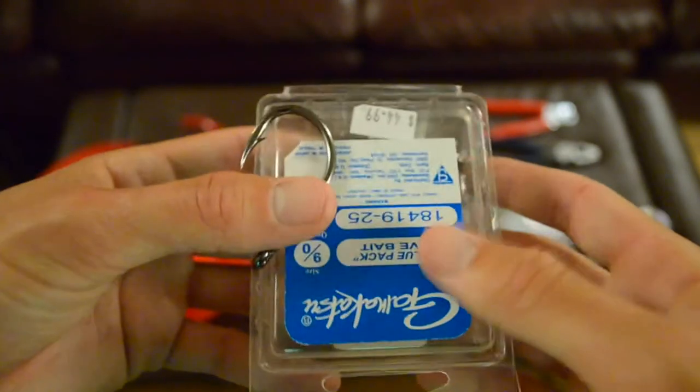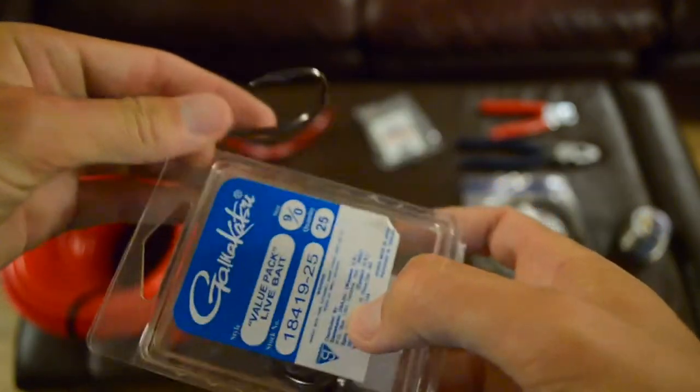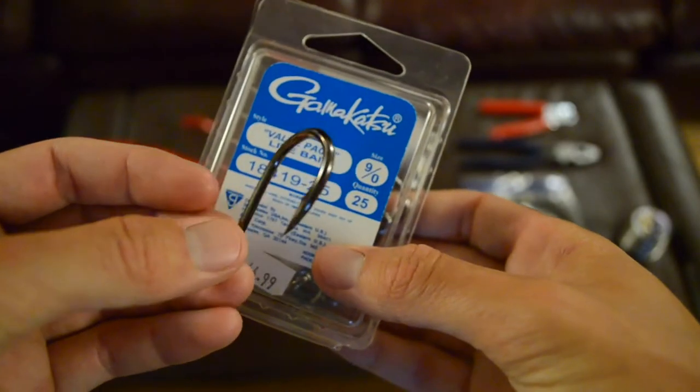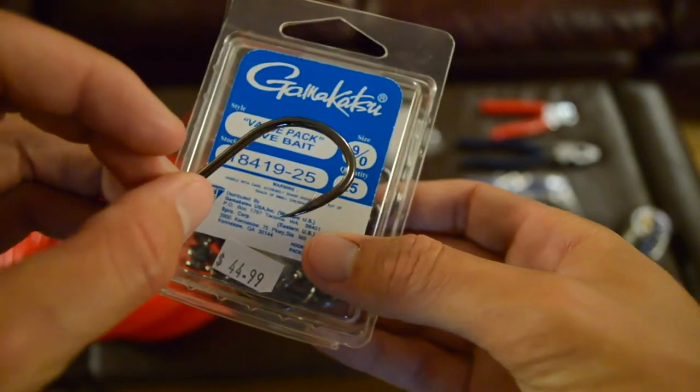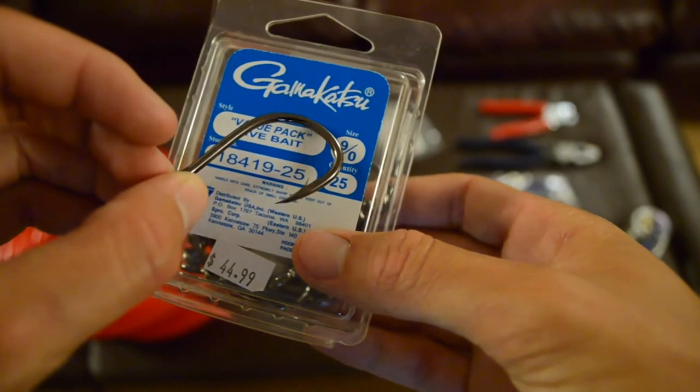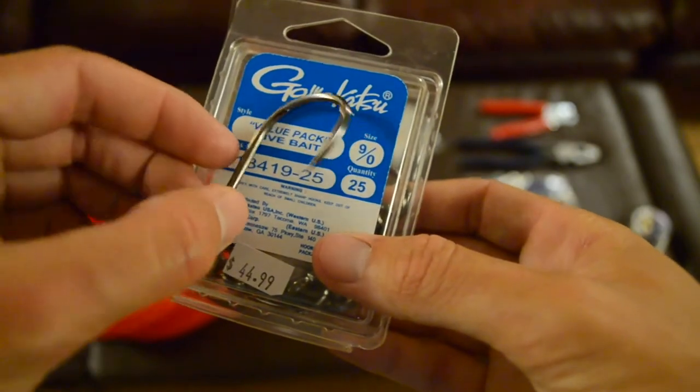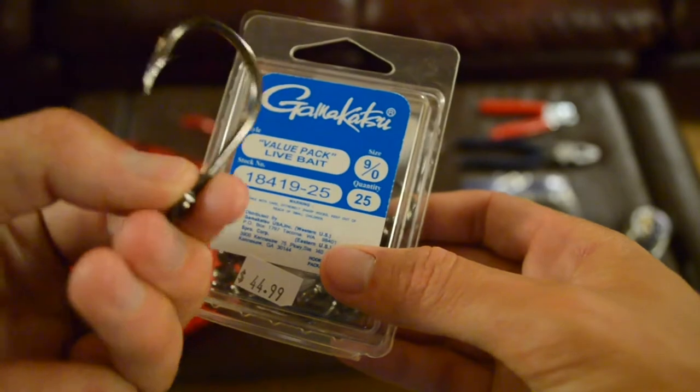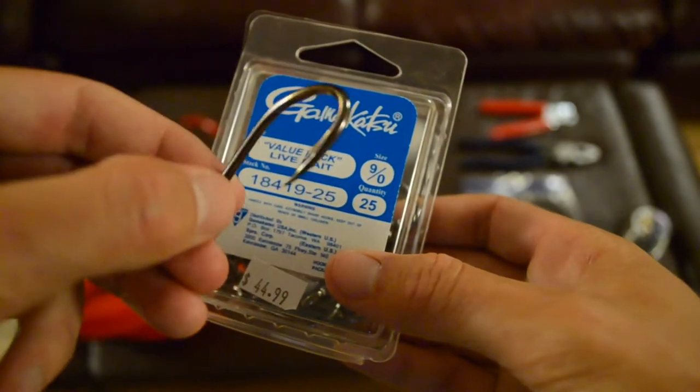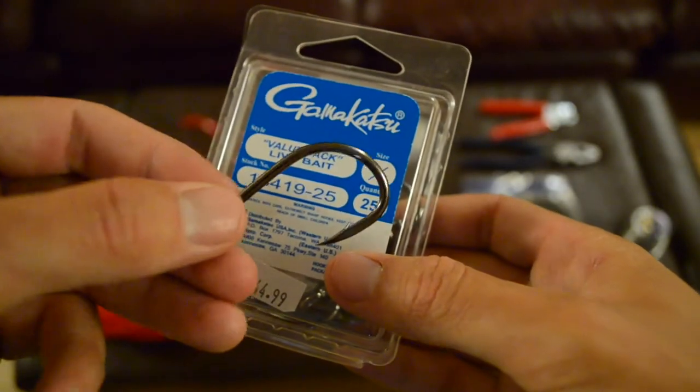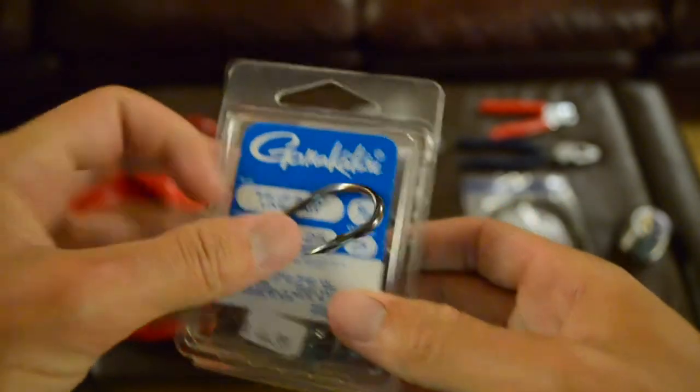So, now I'll move on to hooks. We have Gamakatsu Live Bait Hooks 9/0. I find this is a good size and good hook to use with a tube and worm. The size is good for hooking striped bass and bluefish, which have pretty large mouths. And Gamakatsu makes nice and sharp hooks.